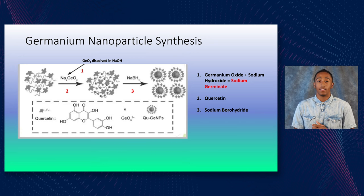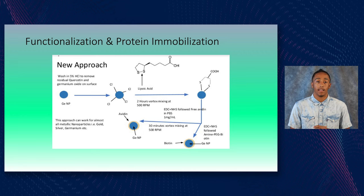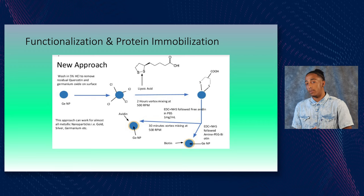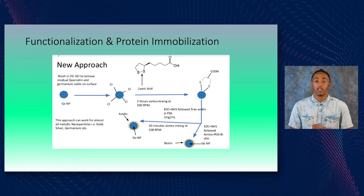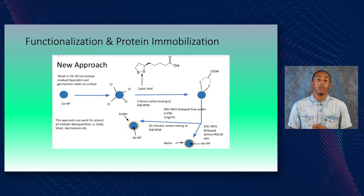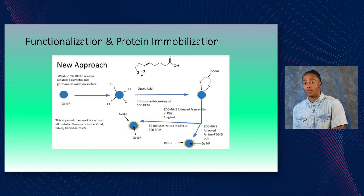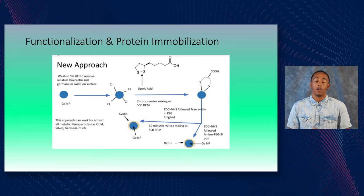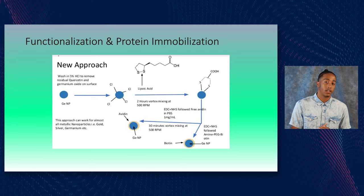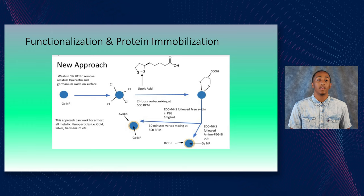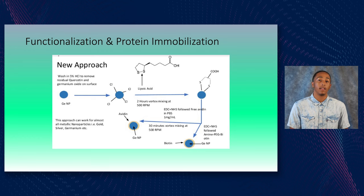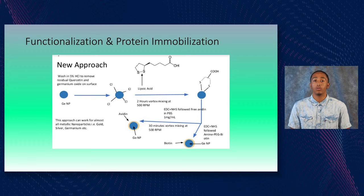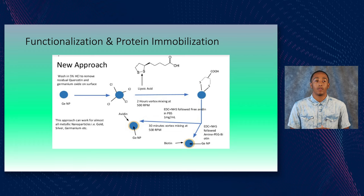We checked the size of these particles using dynamic light scattering as well as zeta potential. Once we determined the size and zeta potential, we functionalized these particles by adding a functional group to their surface, which allows proteins to be immobilized on their surface. Our goal is to use these functionalized germanium nanoparticles to build nanostructures applicable to optical sensors, which will improve their efficiency due to germanium's high refractive index. Thank you.